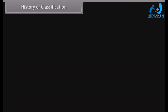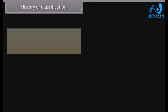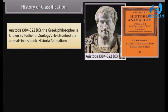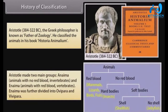History of Classification. Aristotle (384–322 B.C.), the Greek philosopher known as the father of zoology, classified animals in his book Historia Animalium. He made two main groups: animals with no red blood (invertebrates) and animals with red blood (vertebrates). The invertebrate group was further divided into ovipara and vivipara.